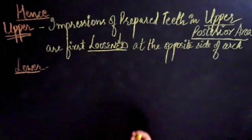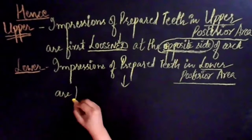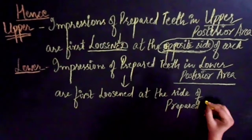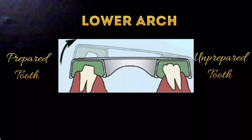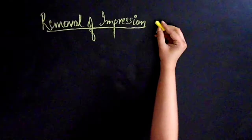For the impressions of prepared teeth in lower arch, they are first loosened at the side of prepared teeth. For removal of mandibular impressions, the impression of prepared tooth in lower arch is first loosened at the side of prepared tooth and not at the side of the unprepared tooth.